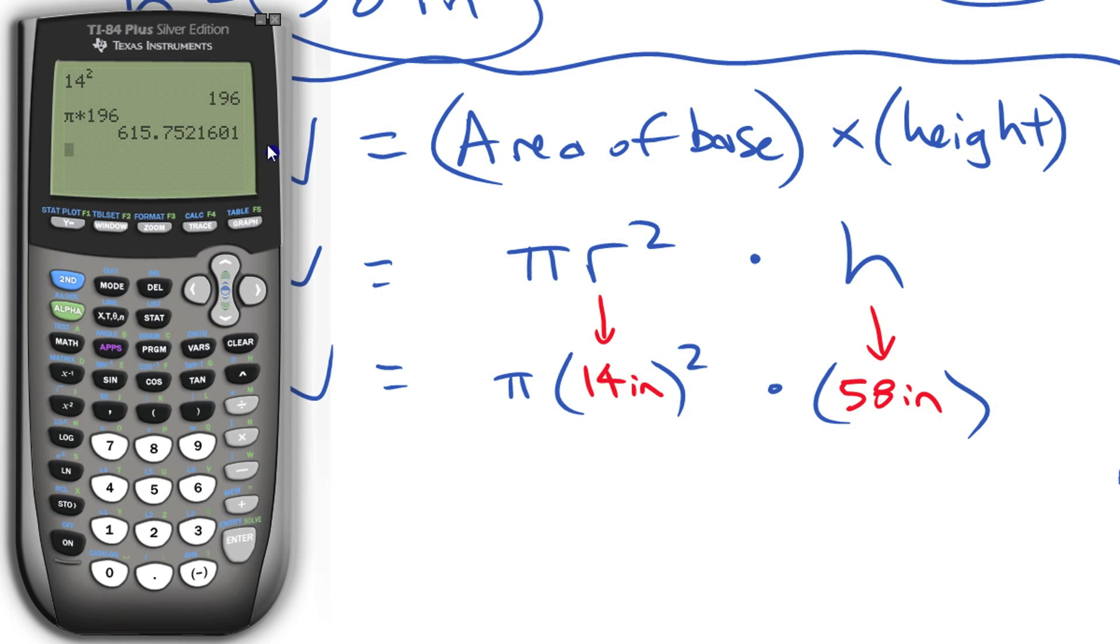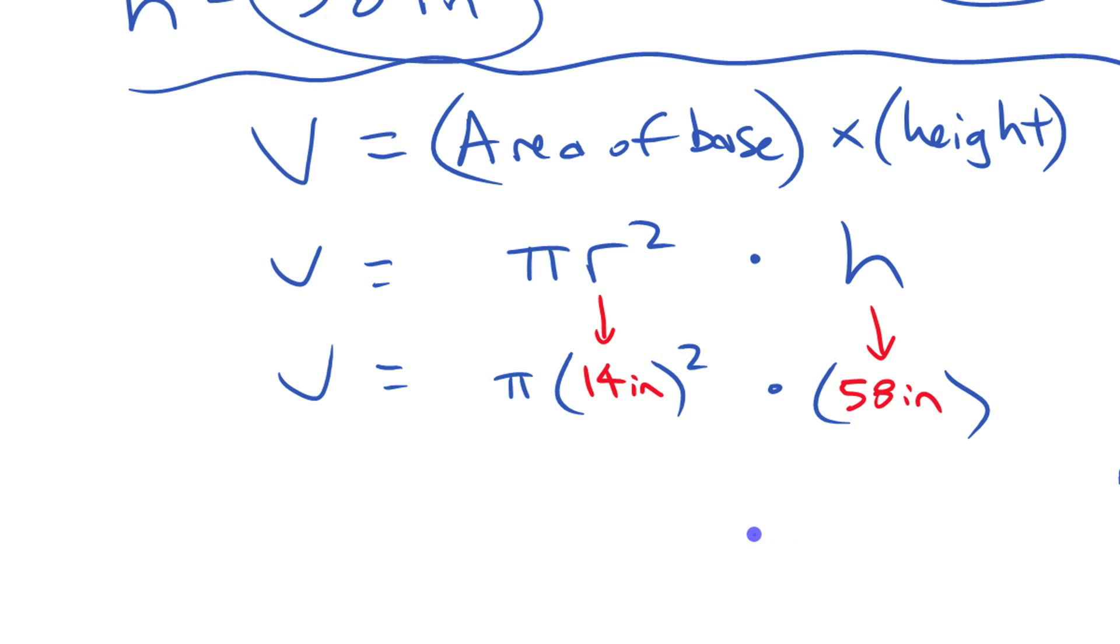All right, that's going to be more exact than if you just use 3.14. The value of π in here, it stores it to a lot of decimal places. All right, so let's put that down on our work. We have 615.75, I'm going to put roughly equal to inches squared here. So we have that, that's the area of that base, the area of that circle.